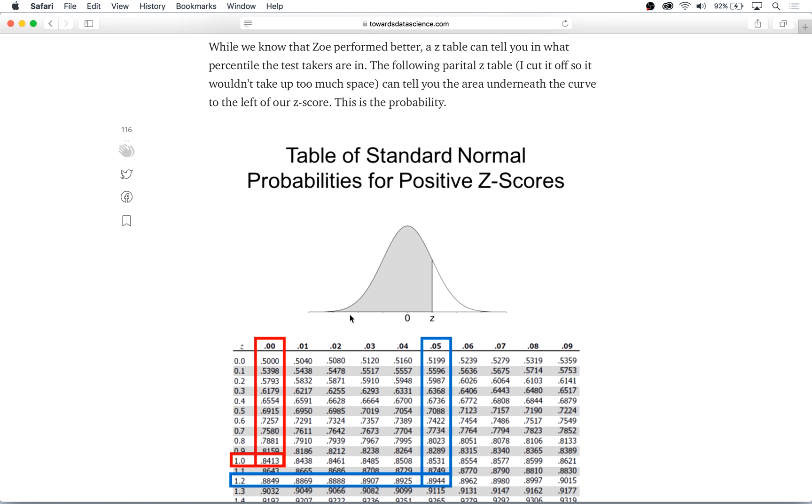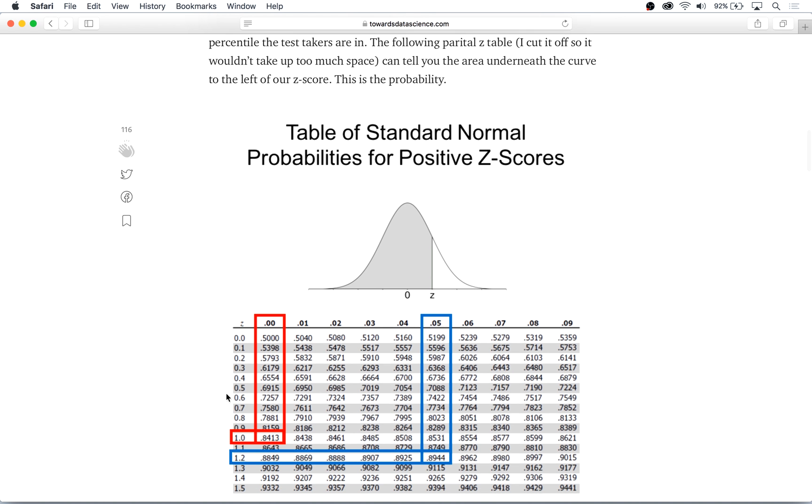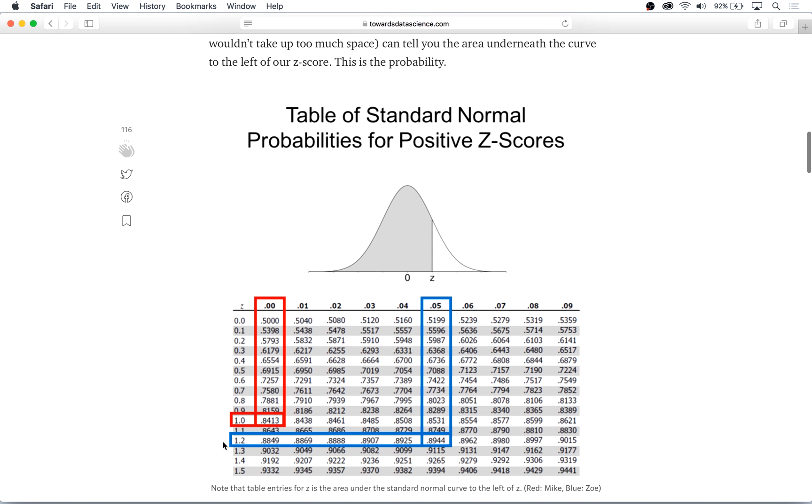Z-tables are generally laid out like so where the labels for rows contain the integer part and the first decimal of our z-score and the label for columns contain the second decimal of z.